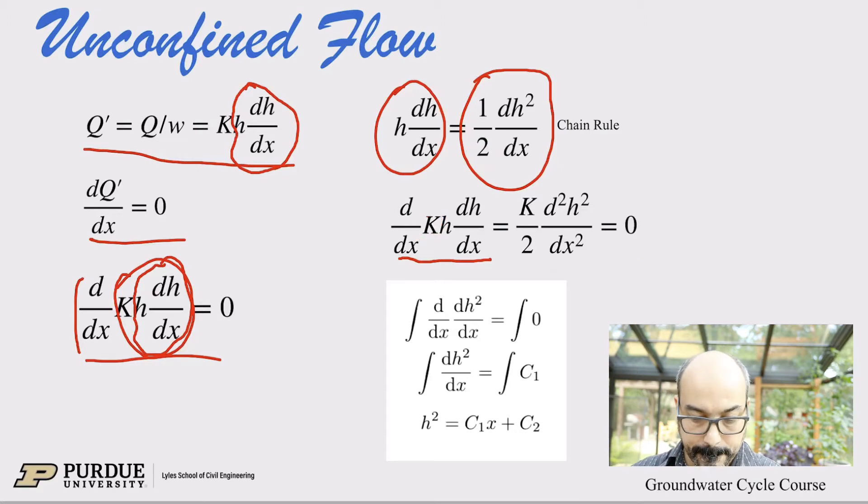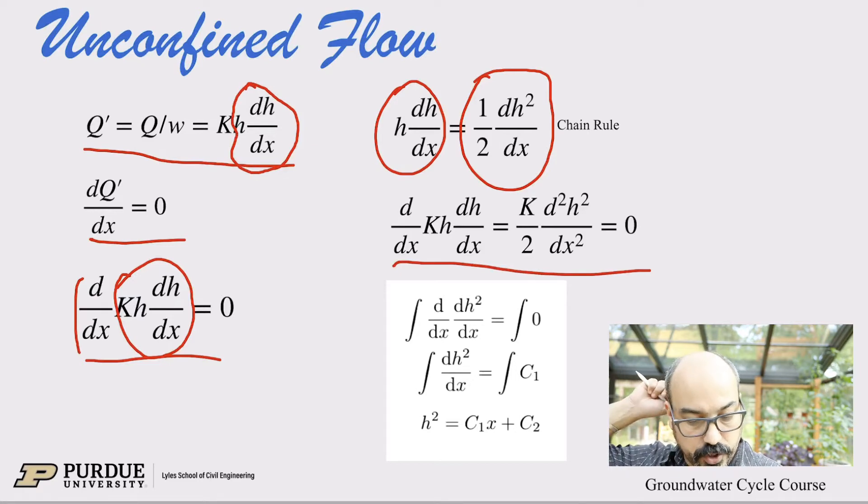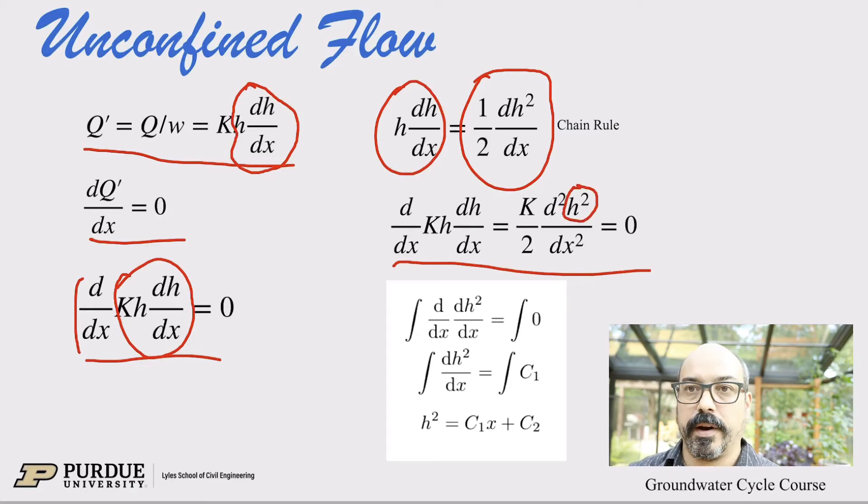So now we have an expression, now we have an expression right here that tells us that K over 2, second derivative of h squared is zero. So notice now that h² is our variable. So again, this is not a square in the differential. This is the actual h². So now we have a variable that instead of being just the head is the head squared. Okay.